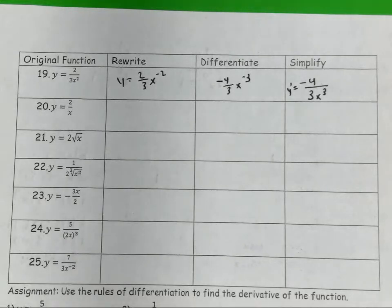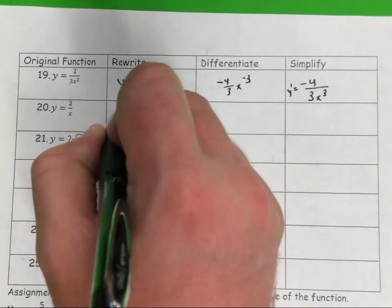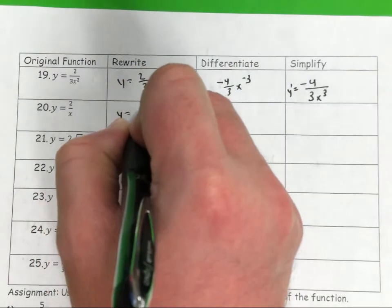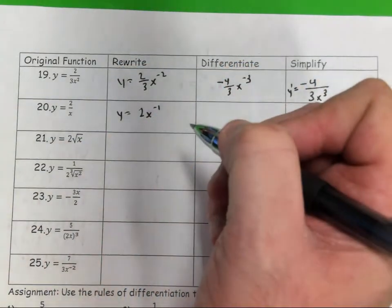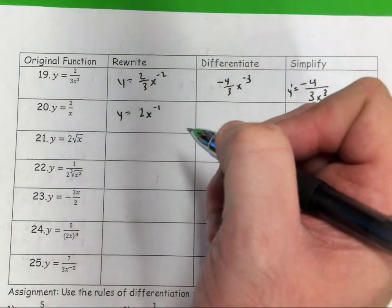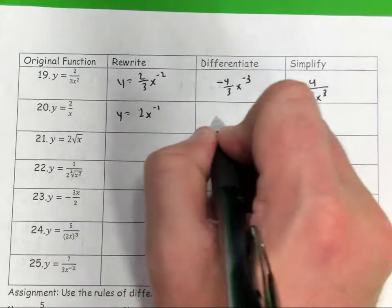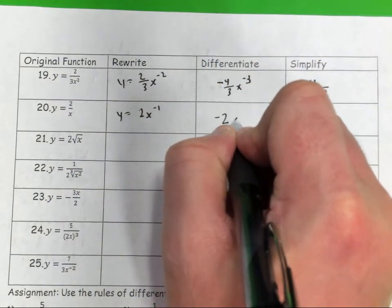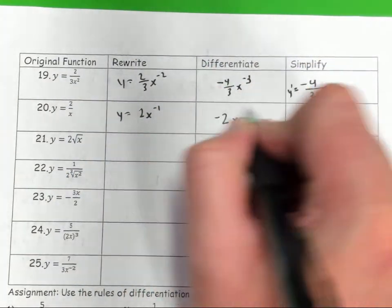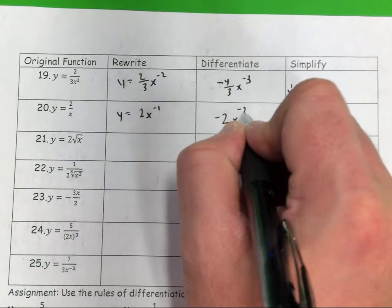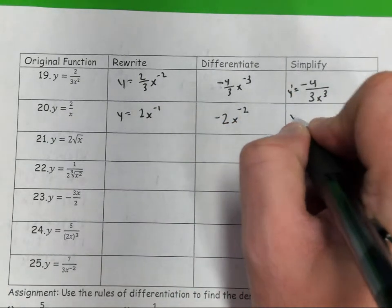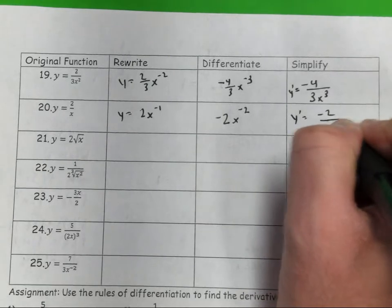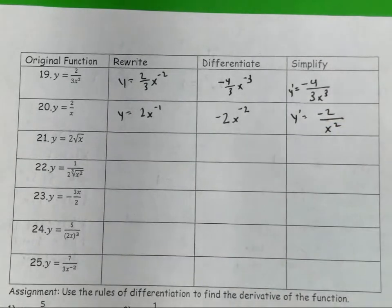Number 20 — how can I rewrite that one? Bring that x up, put it as a negative 1. Negative 1 times 2 is negative 2. Negative 1 minus 1 is negative 2. How can I write the final answer? Negative 2 over x squared — that's my derivative. So if I wanted to find the instantaneous rate of change at any point, that's what I'd plug into.